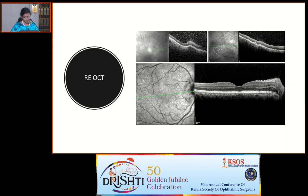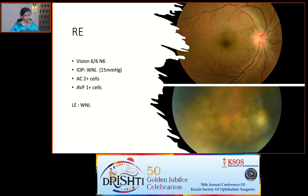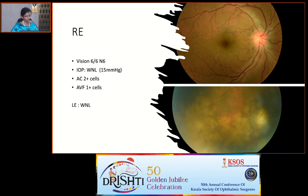Dilated fundus examination of the right eye showed a hyperemic disc with blurred disc margins. In the periphery — the inferotemporal and temporal quadrant — there were grey-white deep retinal lesions with obscured blood vessels over the lesion showing a tract-like pattern. There was a prominent choroidal lesion with normal overlying blood vessels and a significant amount of vitritis over these lesions.